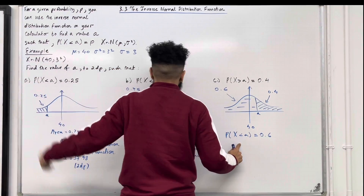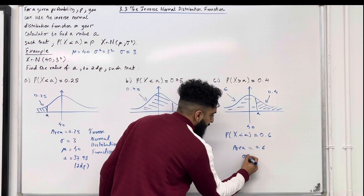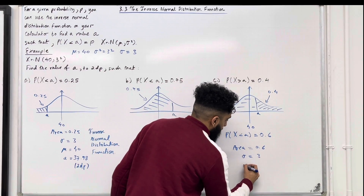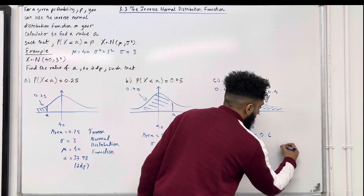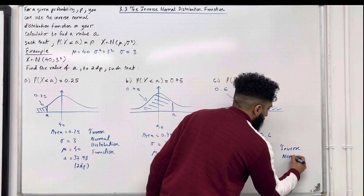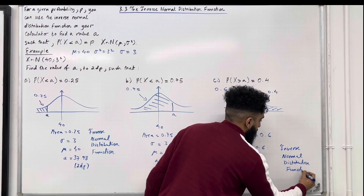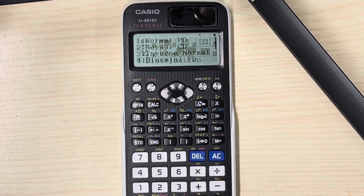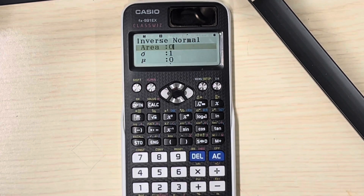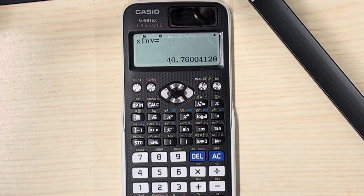So we've got the area to the left of A is equal to 0.6, the standard deviation sigma is equal to 3, and the mean mu is equal to 40. We can now calculate the value of A to two decimal places using the inverse normal distribution function. Press menu, go on to number 7, distribution, press equal. Press number 3, inverse normal. The area is 0.6, equal. The standard deviation is 3, equal. The mean is 40, equal. Press equal again and you get that A is equal to 40.76 to two decimal places.